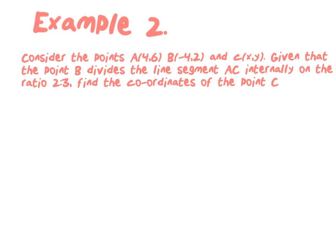Example 2 says: consider the points A is (4, 6), B is (-4, 2), and C is (x, y). Given that the point B divides the line segment AC internally in the ratio of 2 is to 3, find the coordinates of C. First things first, I'm going to draw a visual to give myself an idea of what's occurring. I have a straight line here called AC.